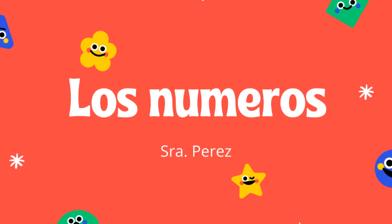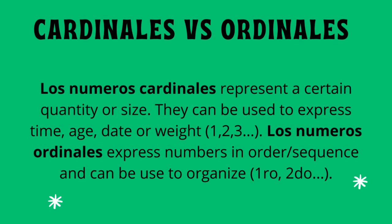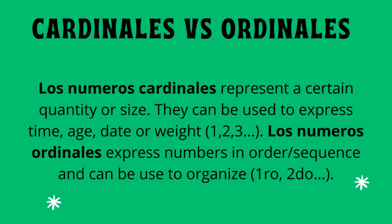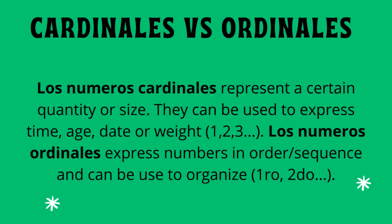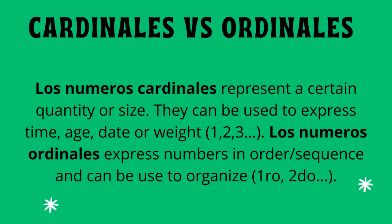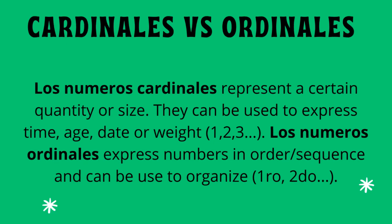Today we're going to be looking at los números. Before we begin with the numbers, let's go ahead and explore the differences between los números cardinales and ordinales. Los números cardinales represent a certain quantity or size. They can be used to express time, age, date, or weight, and they're usually listed as 1, 2, 3, 4, so on and so on. On the other hand, los números ordinales express numbers in order or in sequence and can be used to organize a speech or the steps of a recipe, and they will be listed as 1, 2, 3, so on and so forth.